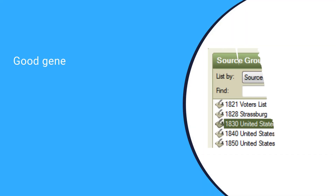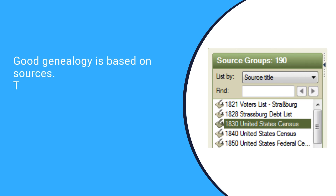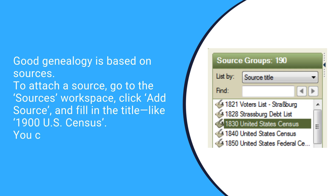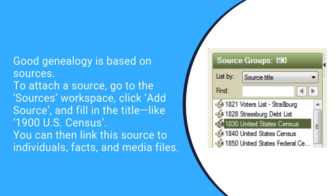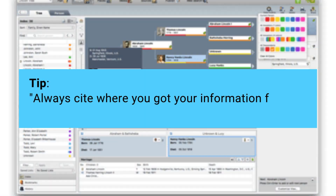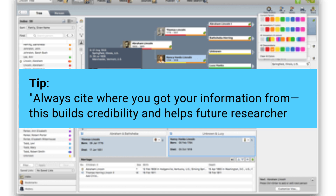Good genealogy is based on sources. To attach a source, go to the Sources workspace, click Add Source, and fill in the title, like '1900 US Census.' You can then link this source to individuals, facts, and media files. Tip: always cite where you got your information from — this builds credibility and helps future researchers.